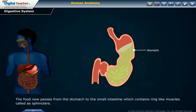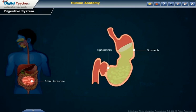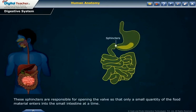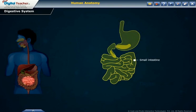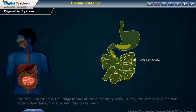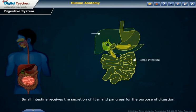Chyme is the process in which the proteins and carbohydrates of the soft slimy substance of food are broken down. The food now passes from the stomach to the small intestine, which contains ring-like muscles called sphincters. These sphincters are responsible for opening the valve so that only a small quantity of food material enters into the small intestine at a time.